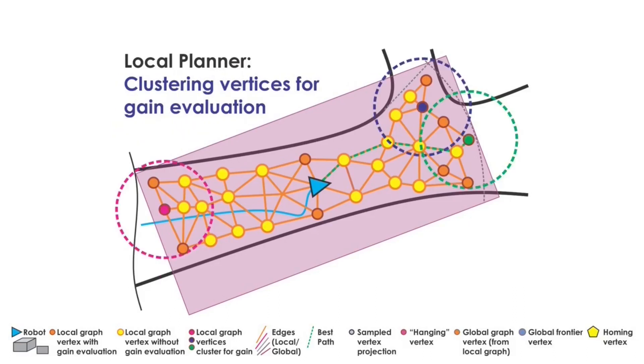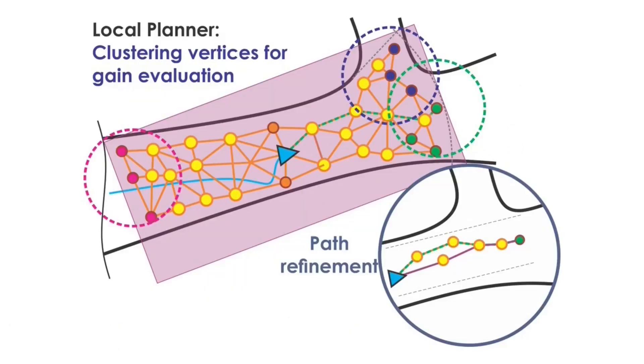To further speed up this process, the leaf vertices may be clustered. The volumetric gain is then calculated only for one vertex in each cluster and assigned to the other vertices. Eventually, the path having the highest exploration gain is selected, further refined for safety, and executed by the robot.